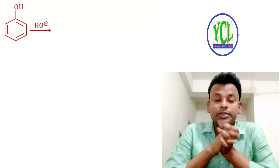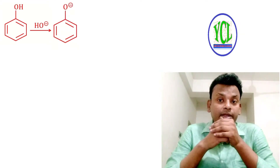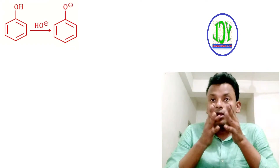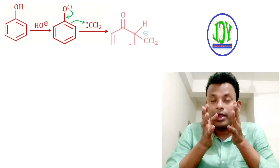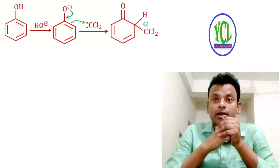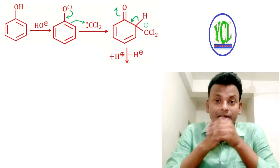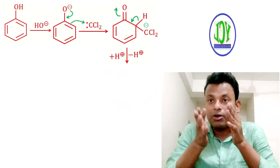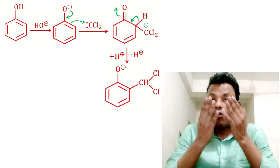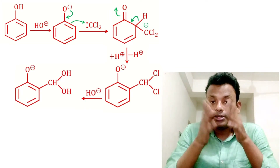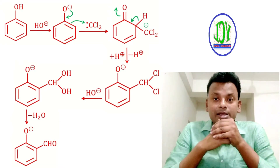Phenol reacts with NaOH to give sodium phenoxide. It is an activating group — that is, more reactive — and reacts with dichlorocarbene. Here dichlorocarbene is the electrophile and gives an addition product. This addition product loses an H+ ion, and then OH negative replaces the dichloro group, and this compound loses a water molecule to give the aldehyde — that is, salicylaldehyde.